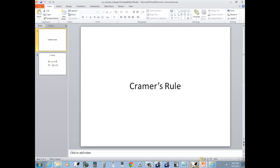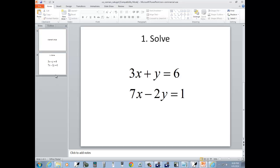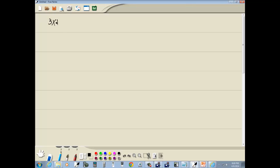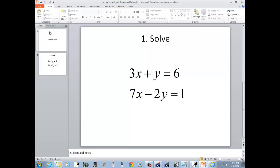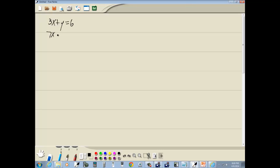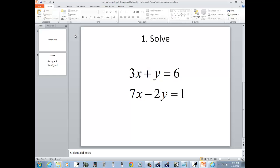We've got 3x plus y equals 6 and 7x minus 2y is equal to 1.